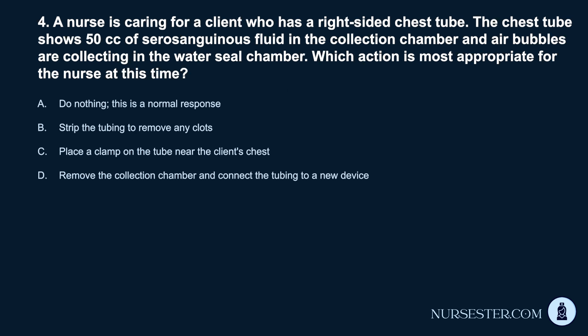Question 4. A nurse is caring for a client who has a right-sided chest tube. The chest tube shows 50 cubic centimeters of serosanguinous fluid in the collection chamber and air bubbles are collecting in the water seal chamber. Which action is most appropriate for the nurse at this time? A. Do nothing — this is a normal response. B. Strip the tubing to remove any clots. C. Place a clamp on the tube near the client's chest. D. Remove the collection chamber and connect the tubing to a new device.